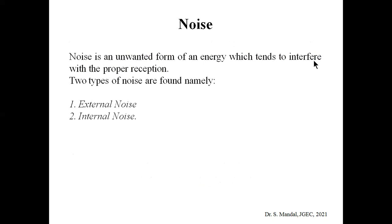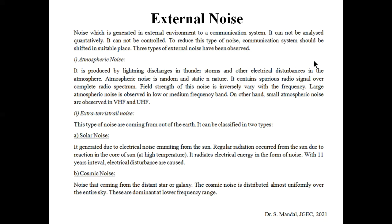Noise is basically the unwanted form of energy which tends to interfere with the proper reception of a signal. Whenever we send a signal over a channel, unwanted signals can be incorporated into the original message signal, interfering with it. There are two main types of noise: external noise, generated outside the communication system, and internal noise. External noise cannot be analyzed or measured quantitatively and cannot be controlled. To reduce it, communication systems should be placed in a suitable location.